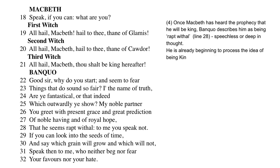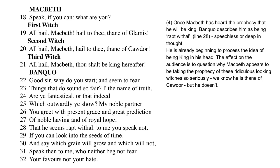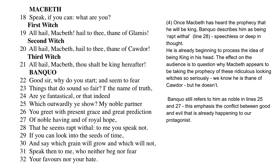Once Macbeth has heard the prophecy that he will be king, Banquo describes him in line 28 as being 'rapt with wonder' — he is speechless, deep in thought, already beginning to process the idea of being king. The effect on the audience is to question why Macbeth appears to take the prophecy of these oddly-looking witches so seriously. We know through dramatic irony that he is already the Thane of Cawdor, but he doesn't. Banquo still refers to him as 'noble' in lines 25 and 27, emphasising the conflict between good and evil already happening to our protagonist.